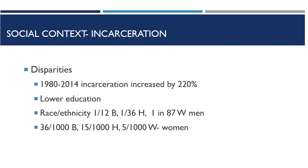People who are incarcerated, both during and after their time in jail, do not have the same access to health care. Between 1980 and 2014, incarceration increased by 220 percent, mostly due to stricter laws. People in jail have lower education levels than those outside. There are stark racial and ethnic disparities: one in every 12 Black men, one in every 36 Hispanic men, and one in 87 white men will be in prison during their lives. For women, 36 of every thousand Black women, 15 of every thousand Hispanic women, and 5 of every thousand white women would be incarcerated.